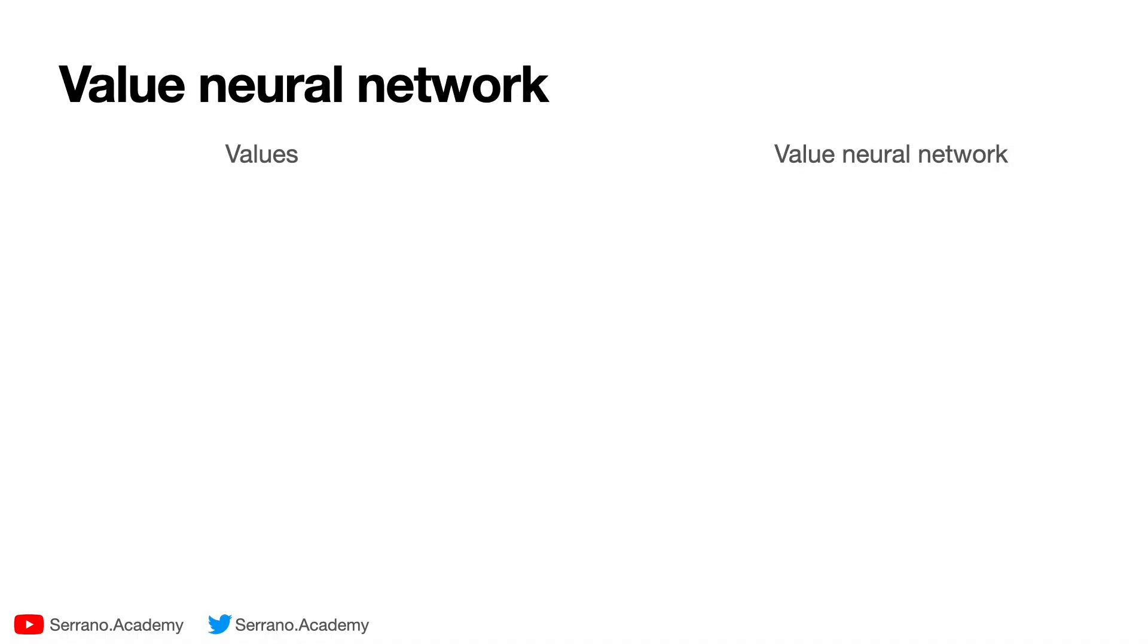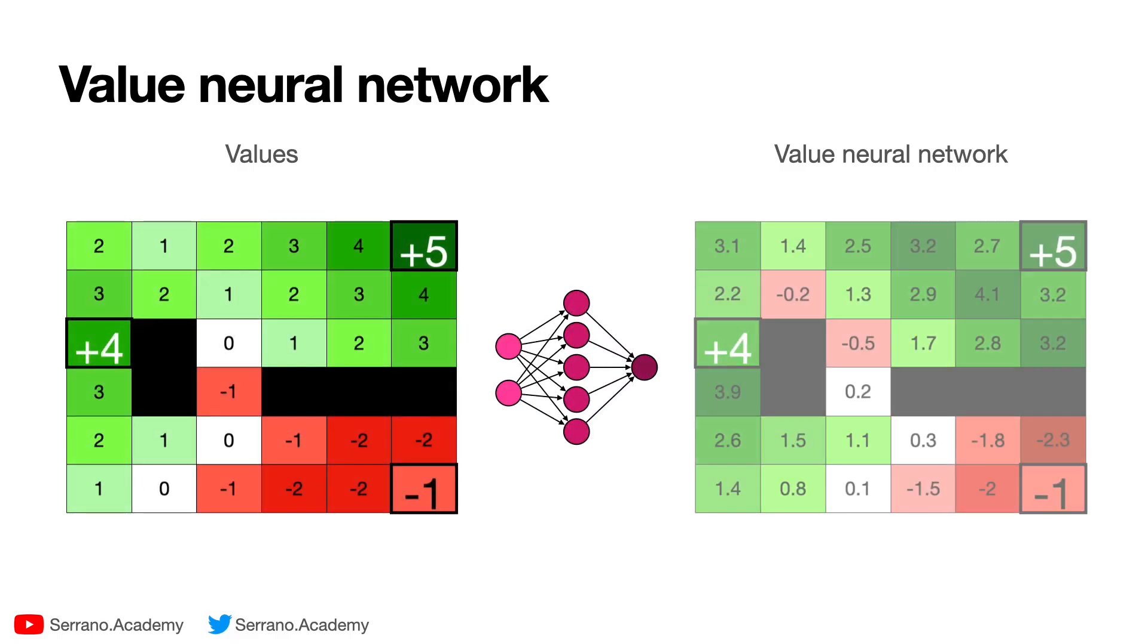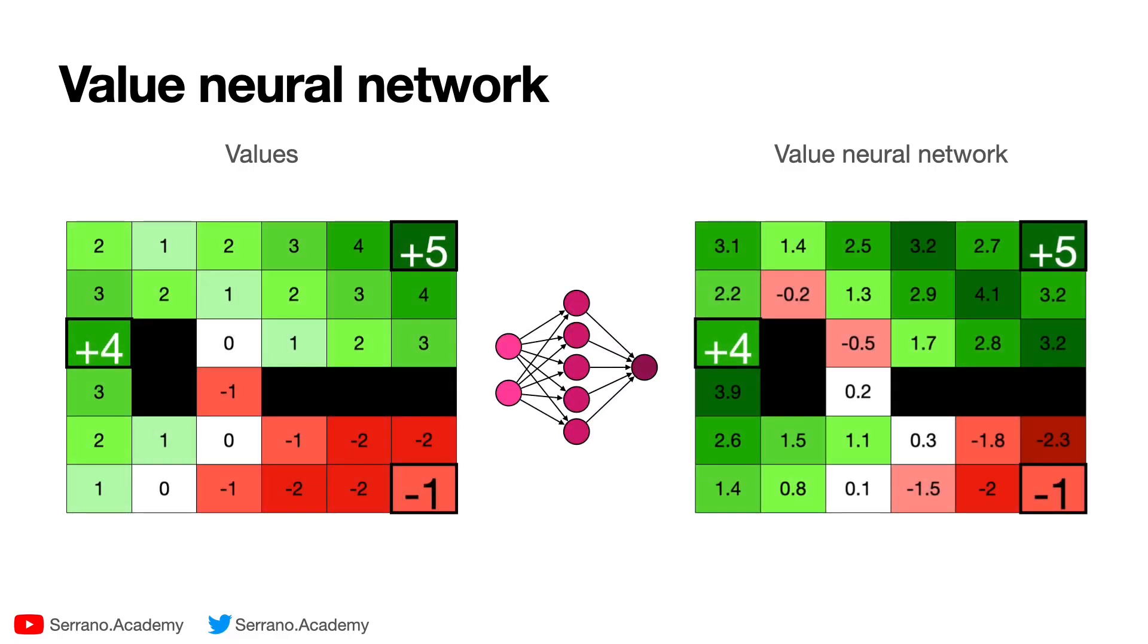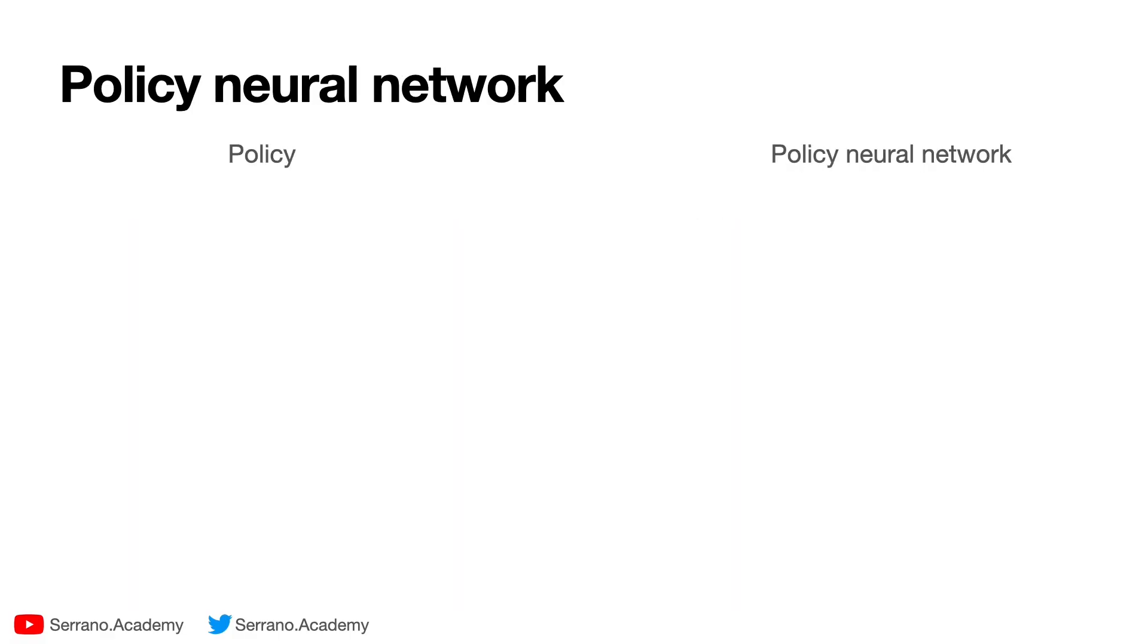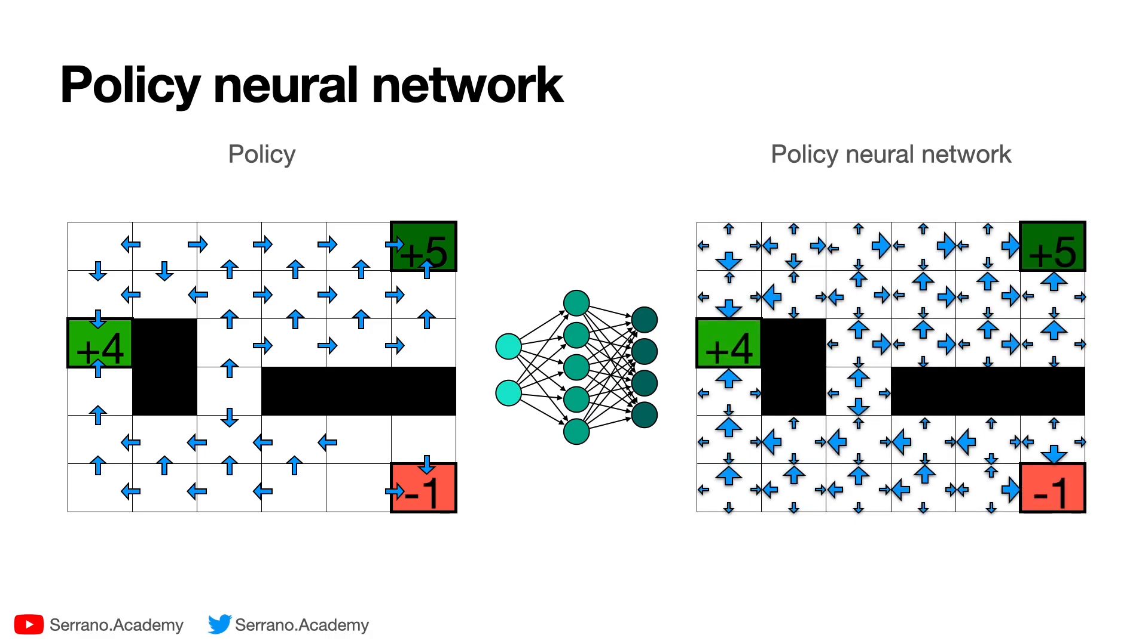This is where neural networks come in. In order to approximate the values, we use something called the value neural network, and that gives us pretty good approximations for the values. And for the policy, we also use a neural network called the policy neural network, which will give us a pretty good approximation of the policy.